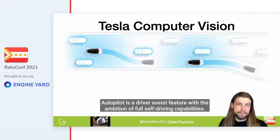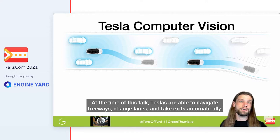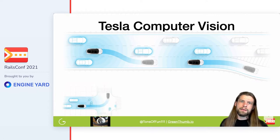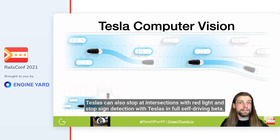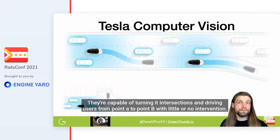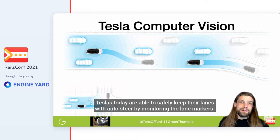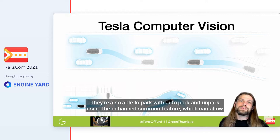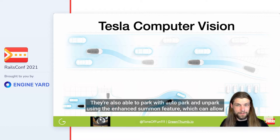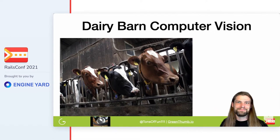Autopilot is a driver assist feature with the ambition of full self-driving capabilities. At the time of this talk, Teslas are able to navigate freeways, change lanes, and take exits automatically — a feature known as Nav on Autopilot. Teslas can also stop at intersections with red light and stop sign detection. With Tesla's full self-driving beta, they're capable of turning at intersections and driving users from point A to point B with little or no intervention. Teslas today are also able to park with Autopark and Unpark using the Enhanced Unsummon feature, which can allow your car to come to you from across a parking lot.